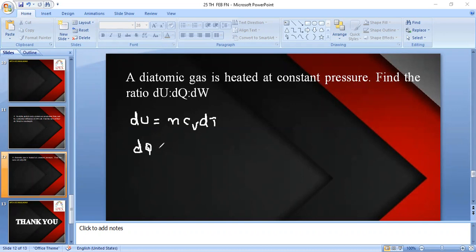And for dQ, it is equal to nC dT, but it is given that at constant pressure, so it will be nCp dT. And dW, according to the first law of thermodynamics, dQ equals dU plus dW, so that dW equals dQ minus dU.